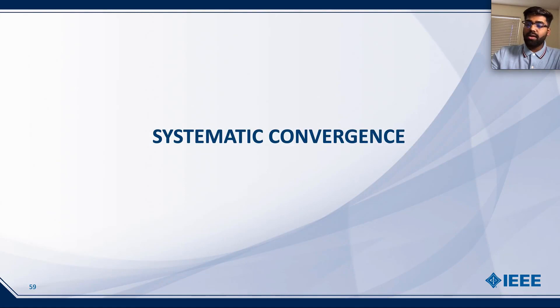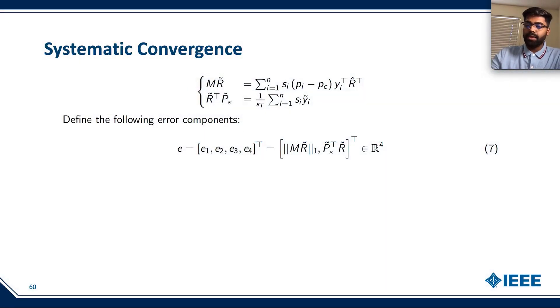Now, let's go over the concept of systematic convergence. According to these error components, we define the following error components, where E equals E1, E2, E3, E4.